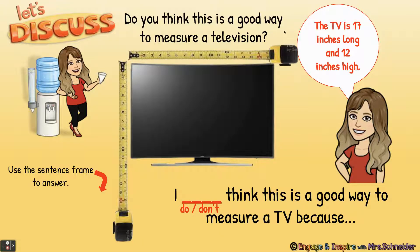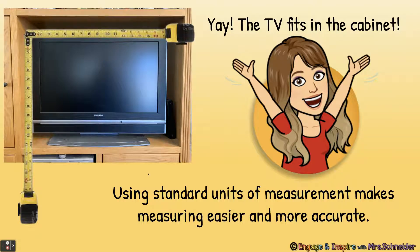Do you think this is a good way to measure a television? The TV is 17 inches long and 12 inches high. They're measuring the 12 inches including the base of the TV. I do think this is a good way to measure a TV because everybody knows that 17 inches long is this long and 12 inches high is this high. So if I gave that measurement to my friend, she would be able to have the same exact measurement as I would. The TV fits in the cabinet. Using standard units of measurement makes measuring easier and more accurate.